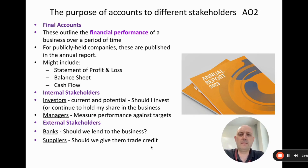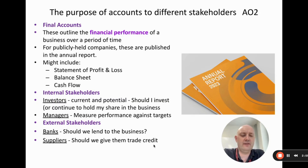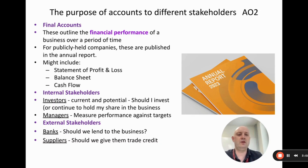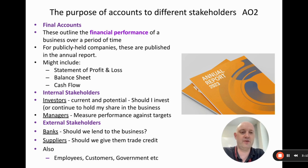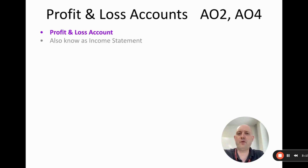Suppliers are also interested because trade credit means allowing a company to pay later, so they want to confirm the business has the ability to pay. Other stakeholders — employees, customers, and governments — also have some interest in the accounts. Essentially, most of the stakeholders covered in earlier chapters will have some interest.